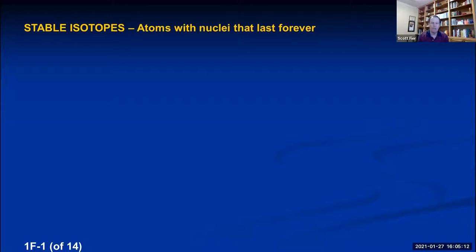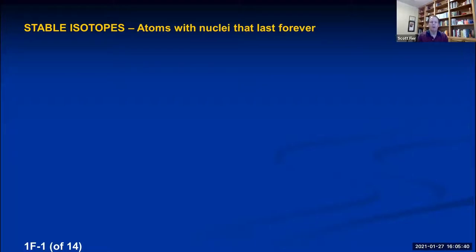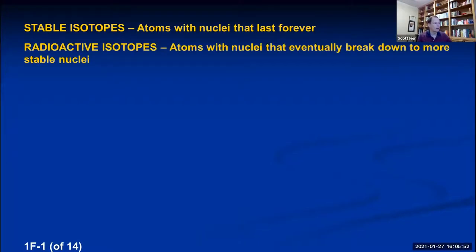Some isotopes are stable atoms. A stable isotope or stable atom means those are atoms that have a nucleus that will last forever. Most of the material you see around you — your table, the wall, the water you're drinking, the metal in your phone — those are made of atoms that are stable isotopes: the carbon, the iron, the aluminum. But there are some isotopes that are not stable, and because those nuclei are not stable, they undergo radioactive decay and disintegrate into something else. We call those radioactive isotopes.